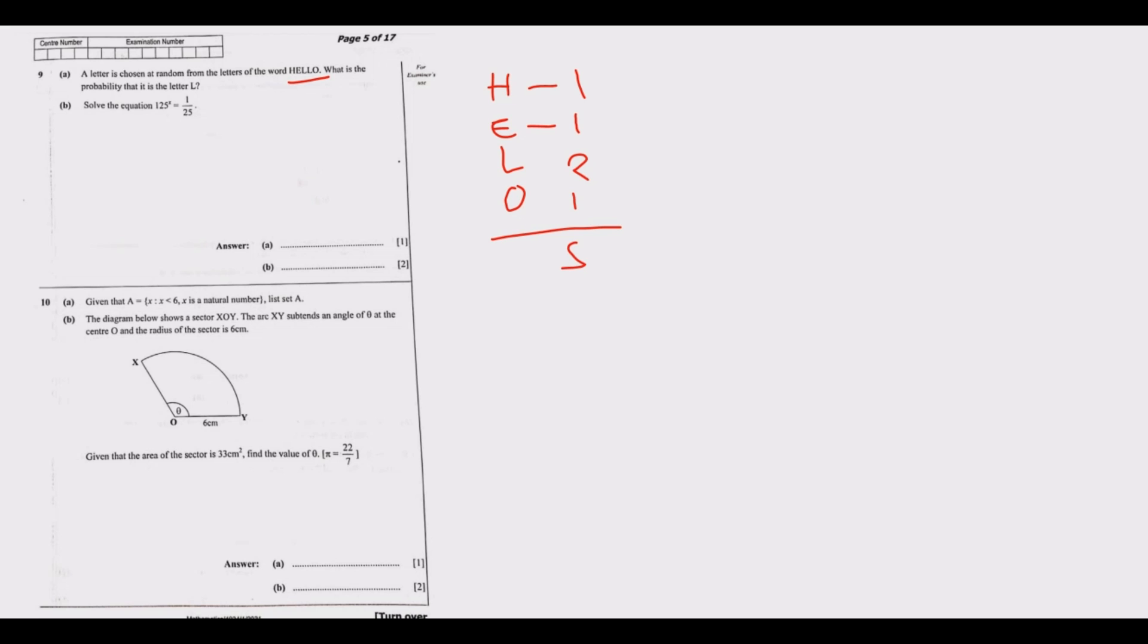So now what's the chance that we'd pick L? So the probability that we are going to pick L out of this is basically how many L's are there - we have two - out of how many letters - five. So this is basically the probability that we are being asked to find. This is how we get this one mark, it's straightforward.